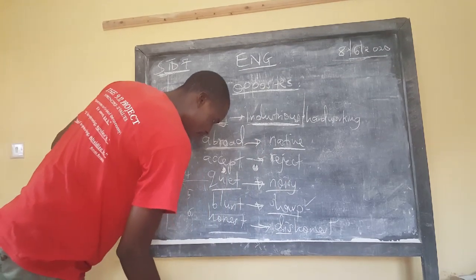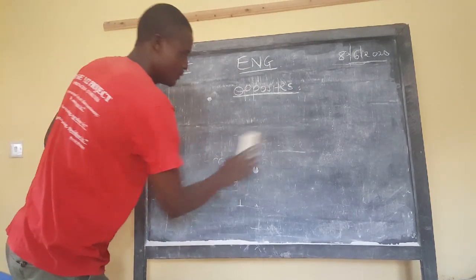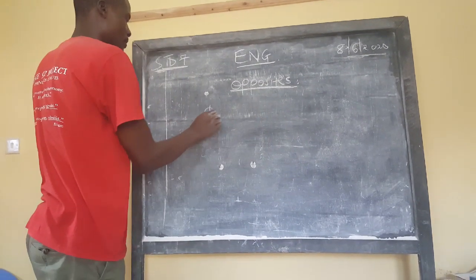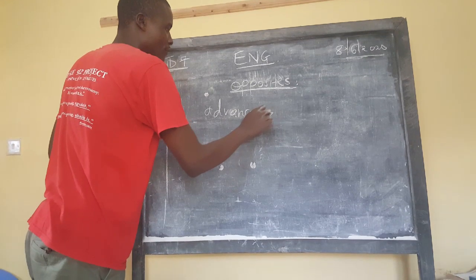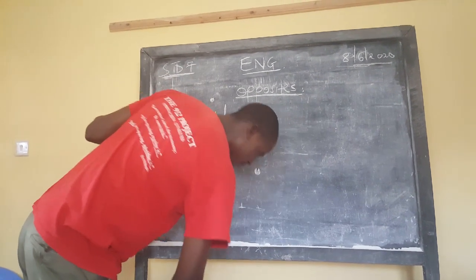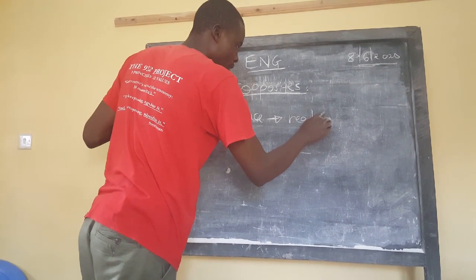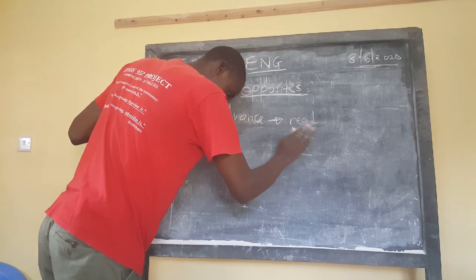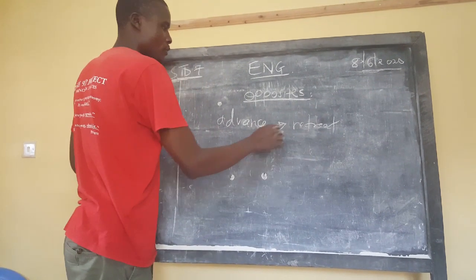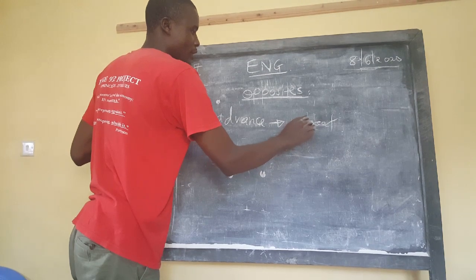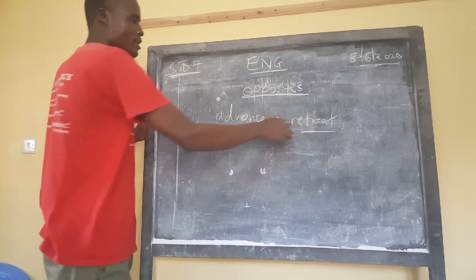We also have the word 'advance'. When something advances, the opposite is 'retreat'. Retreat means to go back, to think backward, or to make some steps backward.